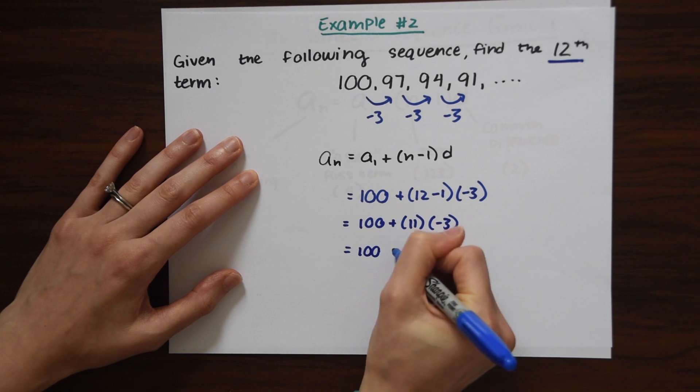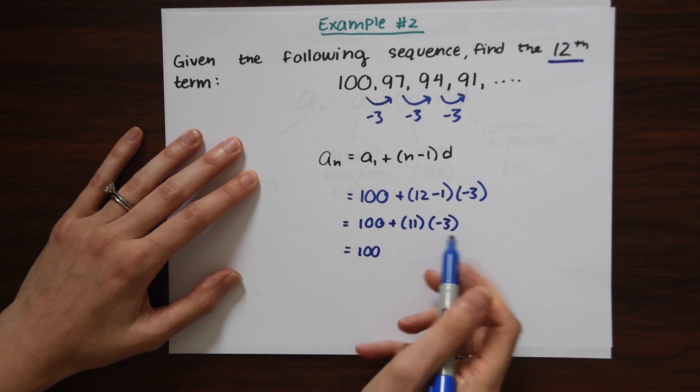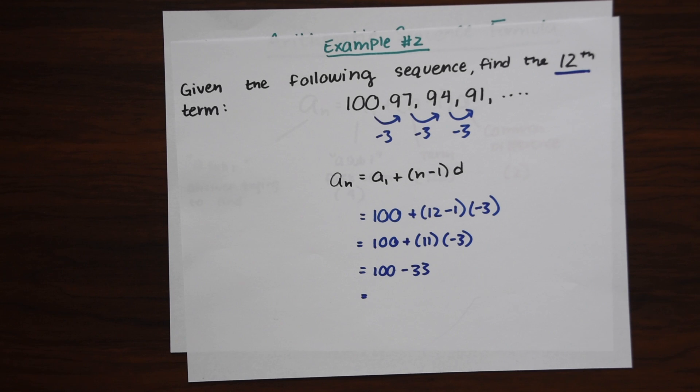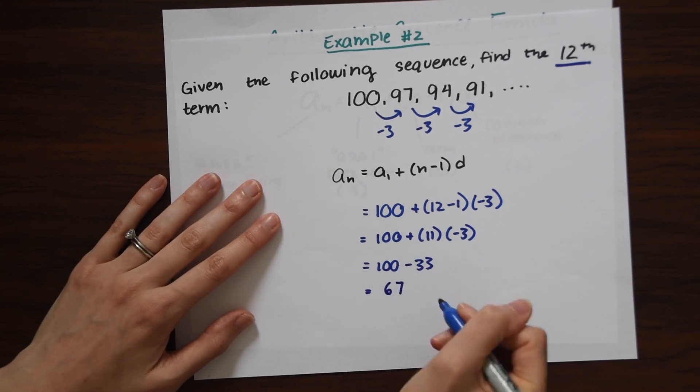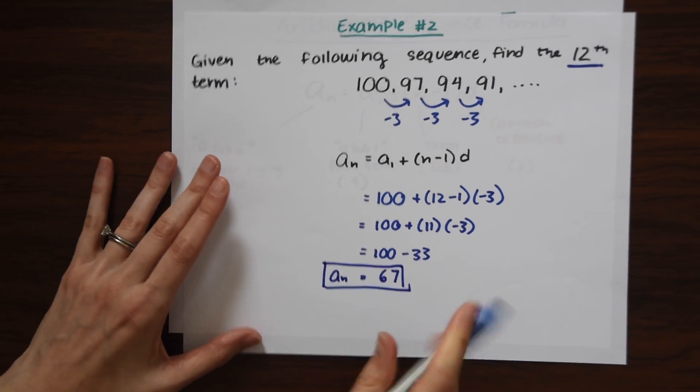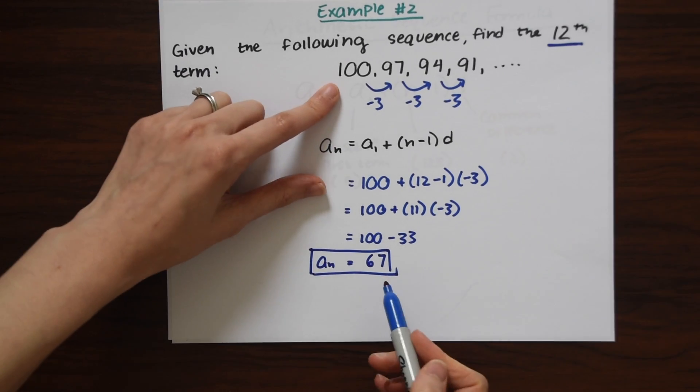This is equal to 100, 11 times negative 3 will just give us minus 33. 100 minus 33 will just give us 67. So A sub N is equal to 67. So that means the 12th term of this sequence is 67.